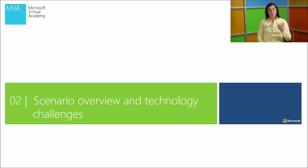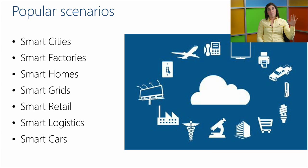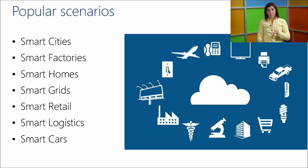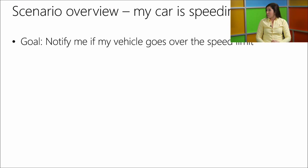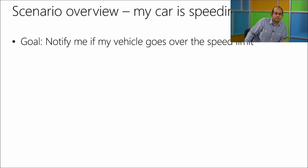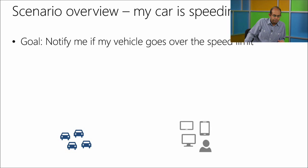In Module 2, we're going to cover a really good scenario and some technology challenges: the connected car. We pulled from a variety of popular IoT and M2M scenarios — smart cities, factories, homes — but since cars are something we all interact with every day and we've seen the incredible evolution of technology within them, that makes a good scenario. A specific use case: you want a phone app that notifies you every time your car is speeding — think about all the different pieces needed to build that. An insurance company wouldn't mind that either.